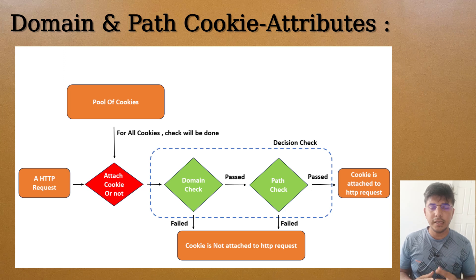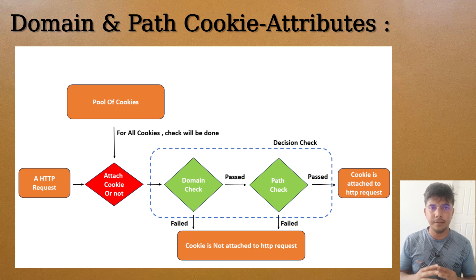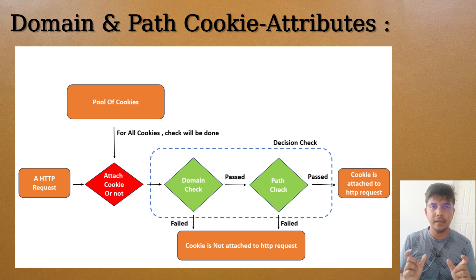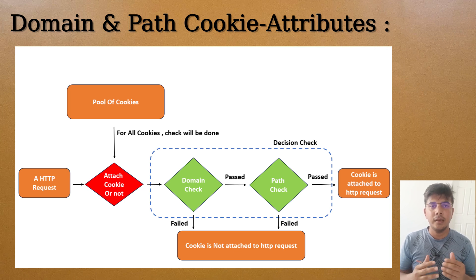Note that during the decision, if the domain criteria is passed, only then the path criteria will be checked. First the domain criteria is checked, and if it is passed, it will go for the path check. If both domain and path are satisfied, then the cookie will be attached to the request.